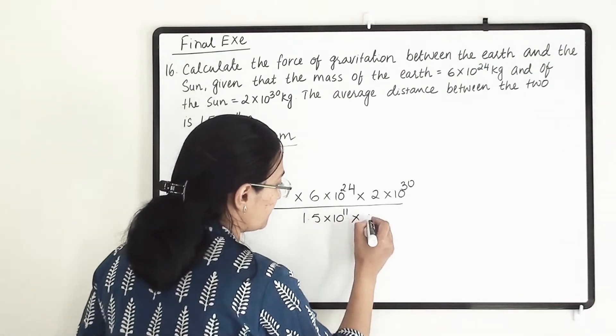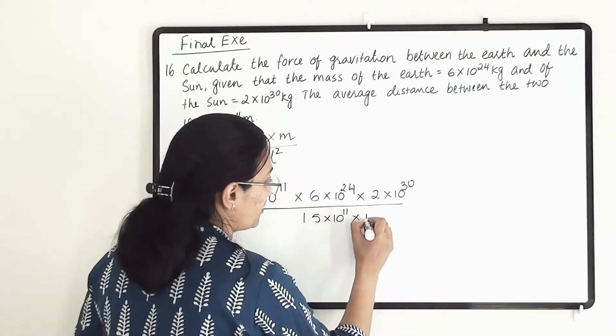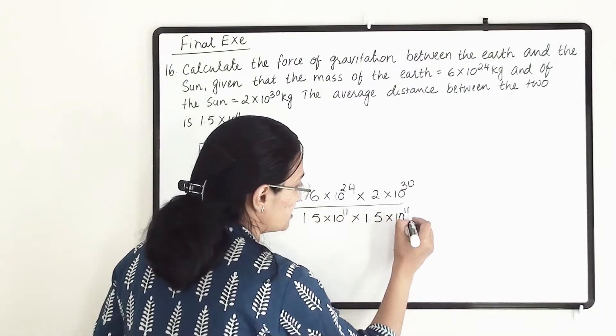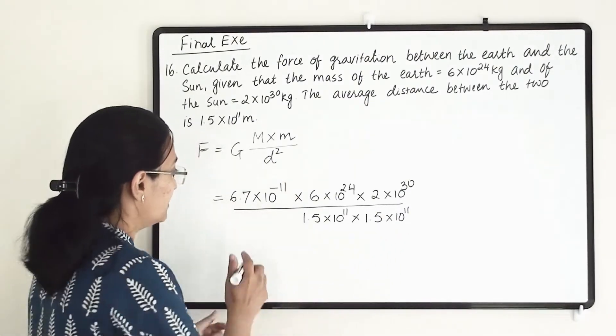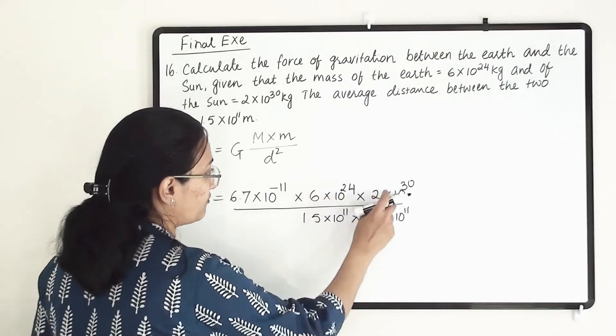We are going to write this term another time because that is d squared, so d times d. Now let us solve this. First, let us solve the power of 10.